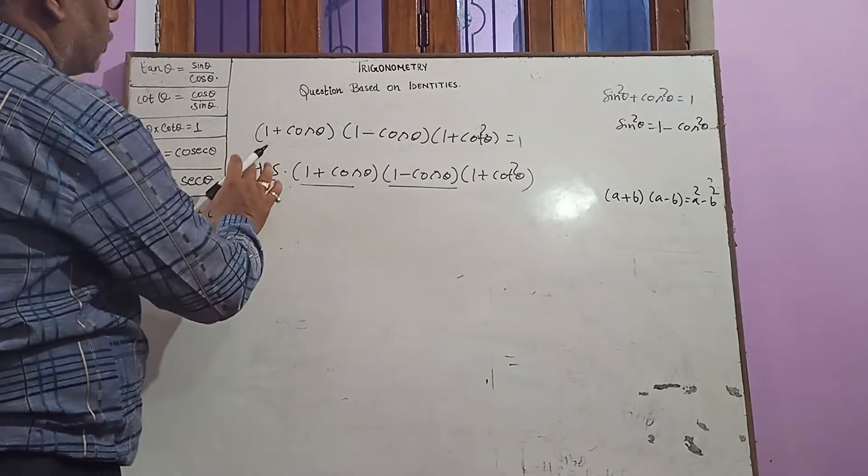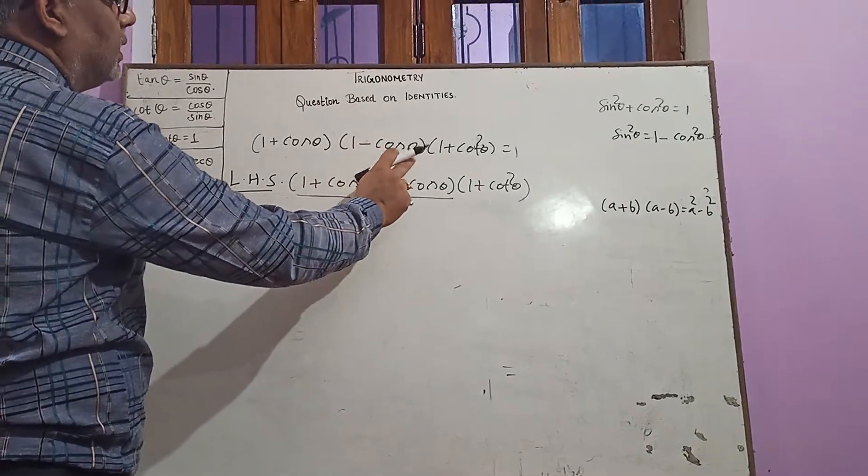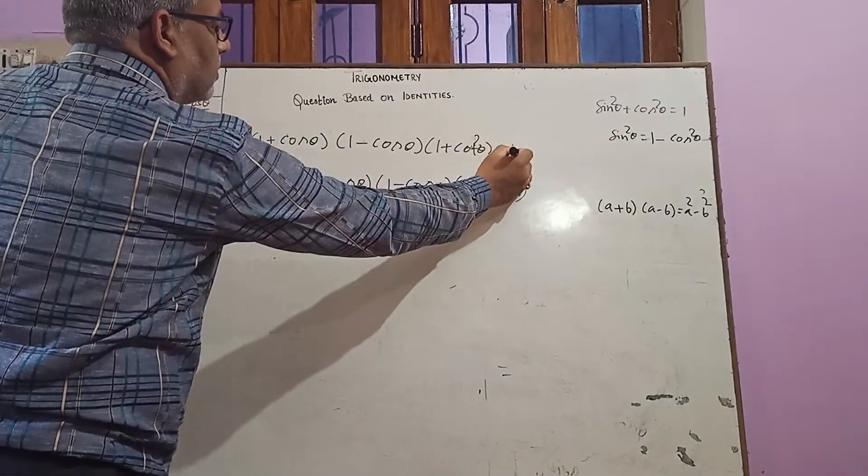Now I am going to explain this question: (1 + cos θ)(1 - cos θ)(1 + cot²θ) which is equal to 1.